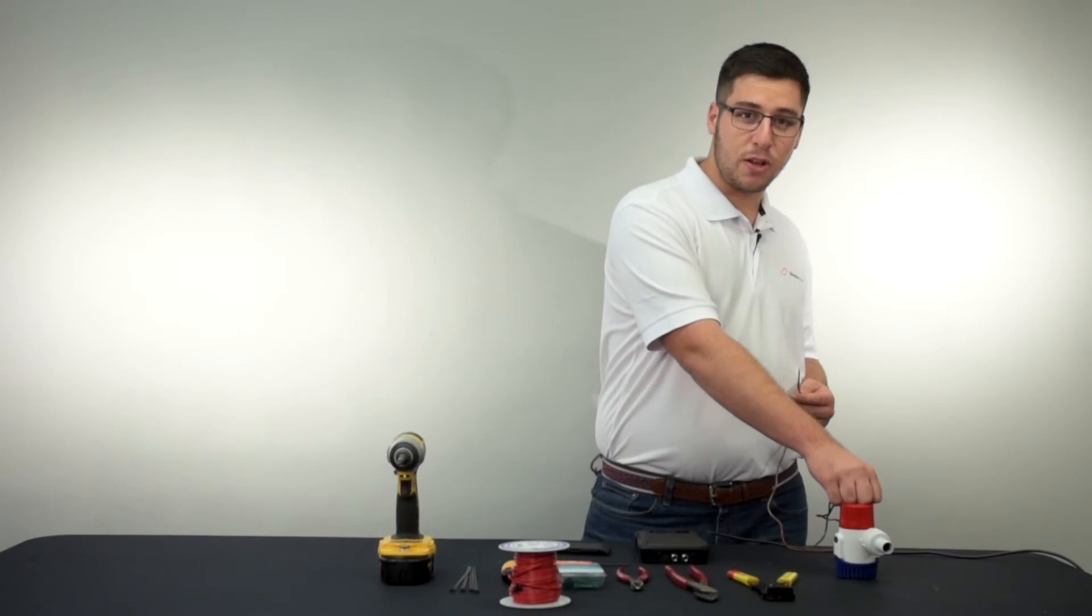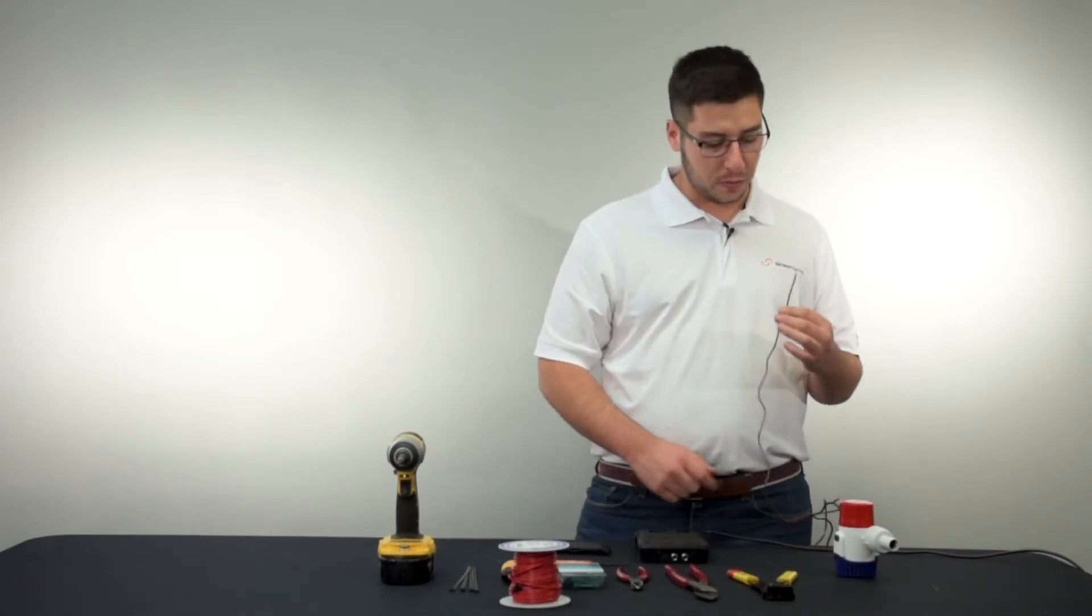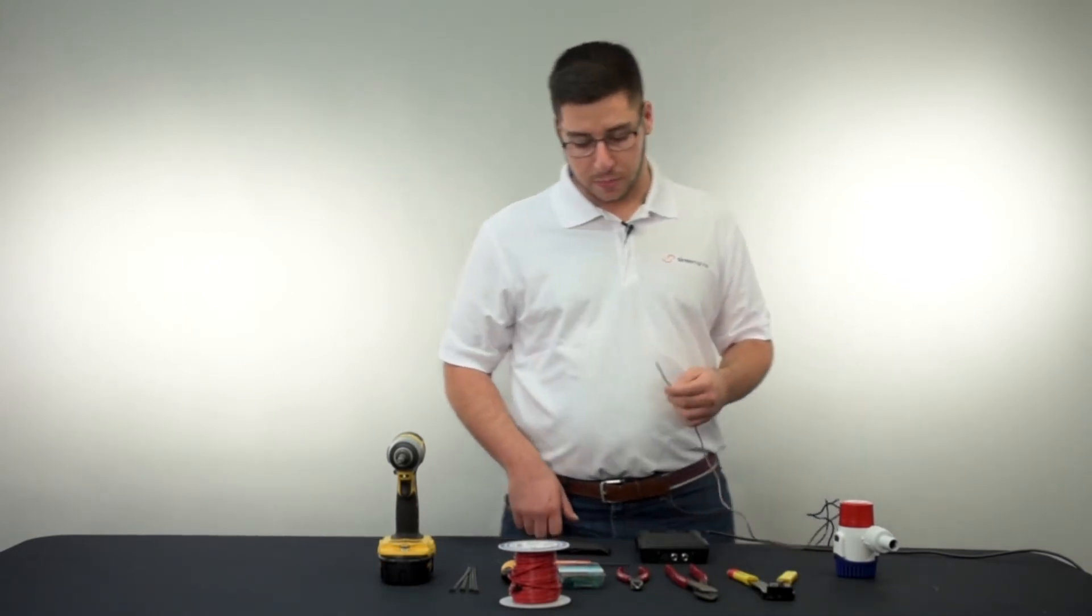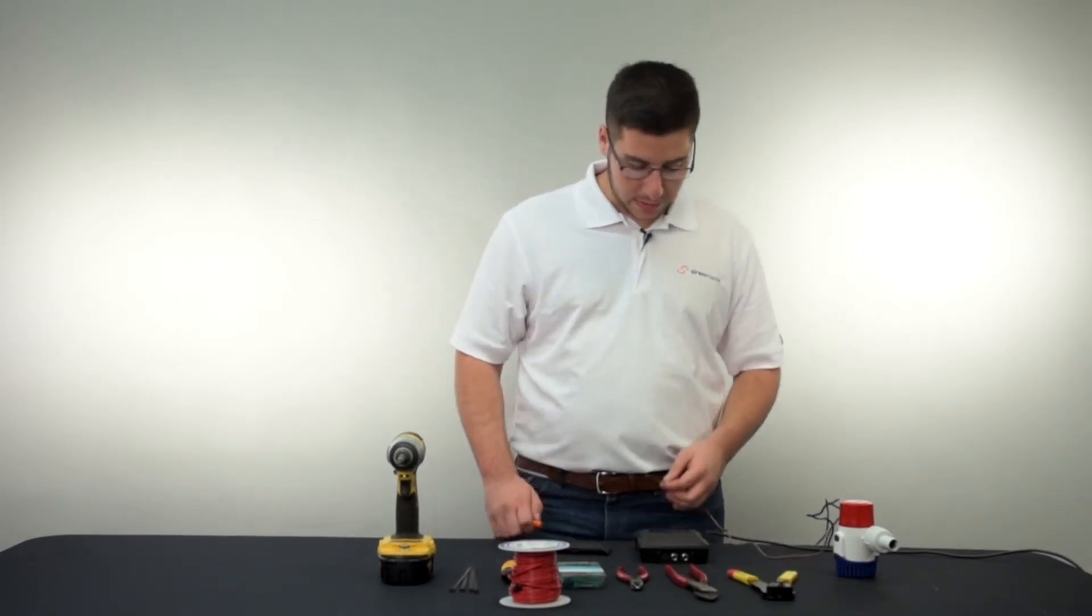So from here if this was an existing installed bilge pump, I'm gonna be splicing into the positive lead on the auto side of the pump, and we're gonna be terminating this at bilge pump one.